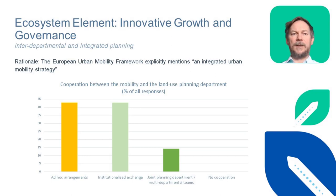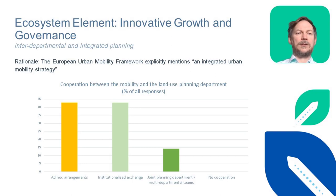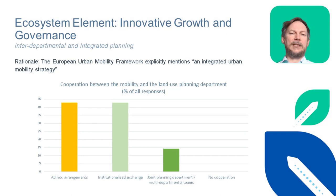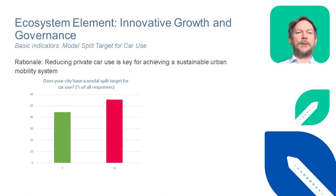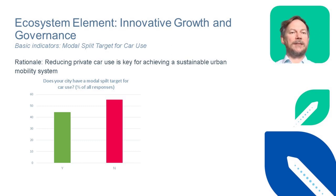The European urban mobility framework explicitly mentions an integrated urban mobility strategy. We asked cities how the cooperation between the mobility and land use planning departments is organized. All cities had some kind of cooperation. Most relied on ad hoc arrangements or institutionalized meetings on a regular basis. Only a small share had implemented institutional innovations such as joint planning departments or multi-departmental teams, as referred to in the SUMP guidelines. The tracker also considers mobility-related targets; we asked for modal split targets for reducing car use, which is key for the sustainable mobility transition.